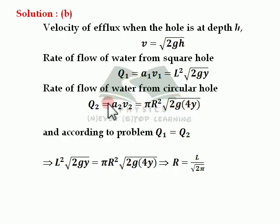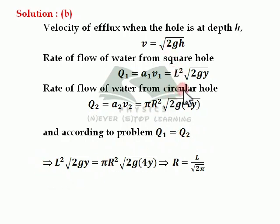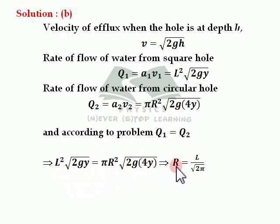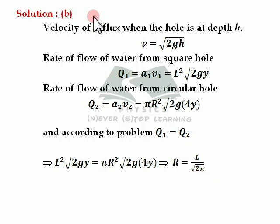Equating Q1 and Q2: L square into root of 2gy equal to pi R square into root of 8gy. Simplifying and rearranging for R, we finally get R equal to L divided by root of 2 pi. Therefore option B is the answer.